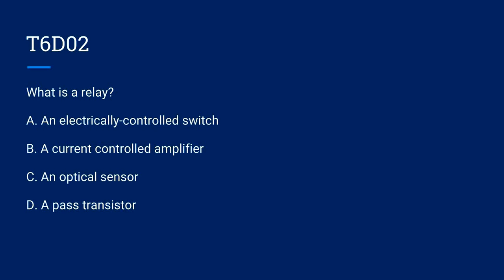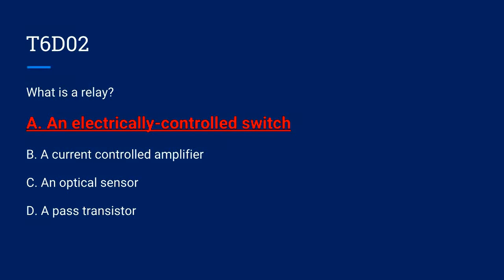T6D02. What is a relay? A. An electrically controlled switch. B. A current controlled amplifier. C. An optical sensor. Or D. A pass transistor. The correct answer is A. An electrically controlled switch.